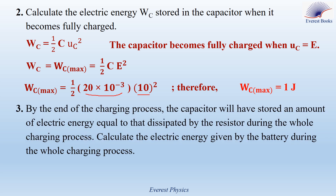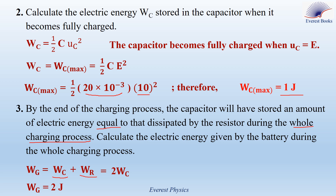Question 3: by the end of the charging process, the capacitor will have stored an amount of energy equal to that dissipated by the resistor during the whole charging process. Calculate the electric energy given by the battery during the whole charging process. During charging, the energy given by the battery equals the energy stored in the capacitor plus the energy dissipated in the resistor. Since Wr = Wc, we have Wg = Wc + Wc = 2·Wc = 2 × 1 joule. Therefore, the energy given by the battery during the whole charging process is equal to 2 joules.